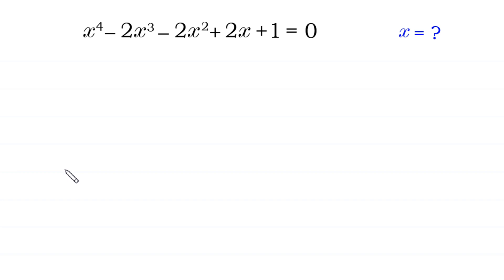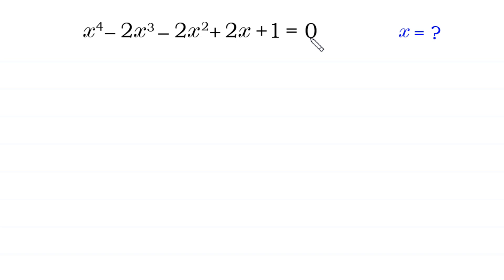Hello, welcome to how to solve this very nice quartic equation: x to the power 4 minus 2x cubed minus 2x squared plus 2x plus 1 is equal to 0. We need to find all possible values of x.